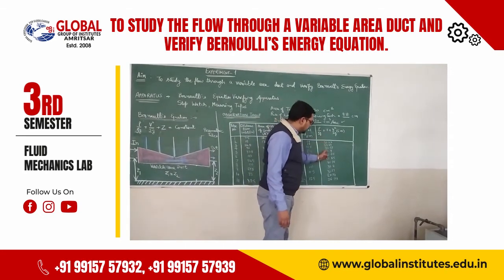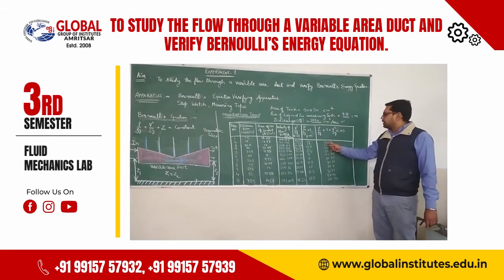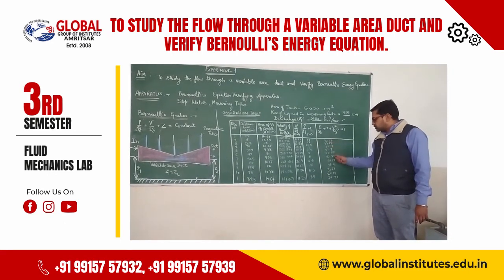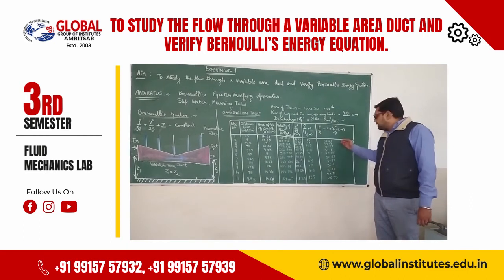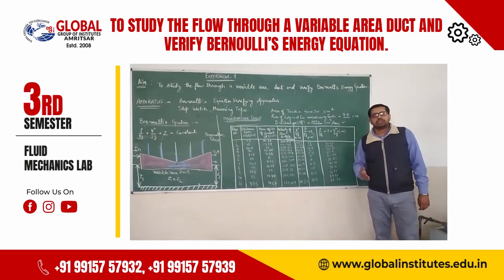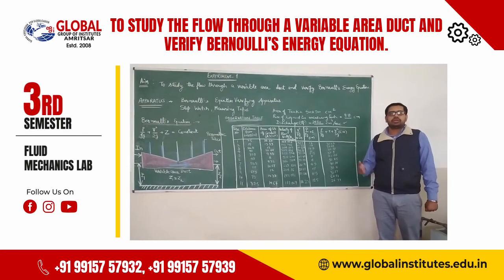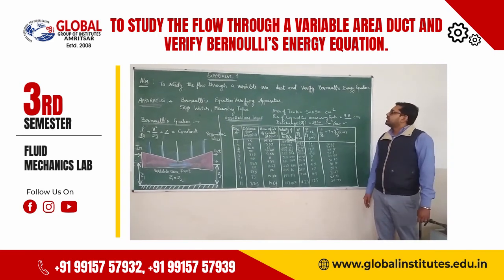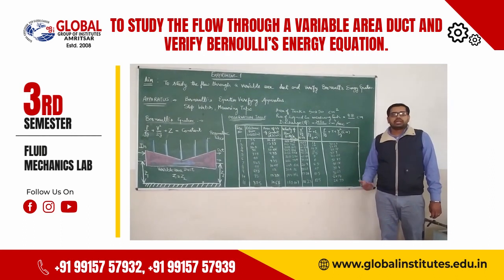After adding the velocity head, pressure head, and potential head (which you can take as zero or any constant), you get the total head at each point. You can observe the values: the first is 32.23, then 34.24, then 35.77, and so on. These values are not equal to each other. This is because Bernoulli's equation is valid for an ideal flow, but we are performing this experiment on a real flow. Therefore, the total head is not constant, confirming that Bernoulli's equation holds for an ideal case but is not strictly applicable to a real fluid case. Thank you.